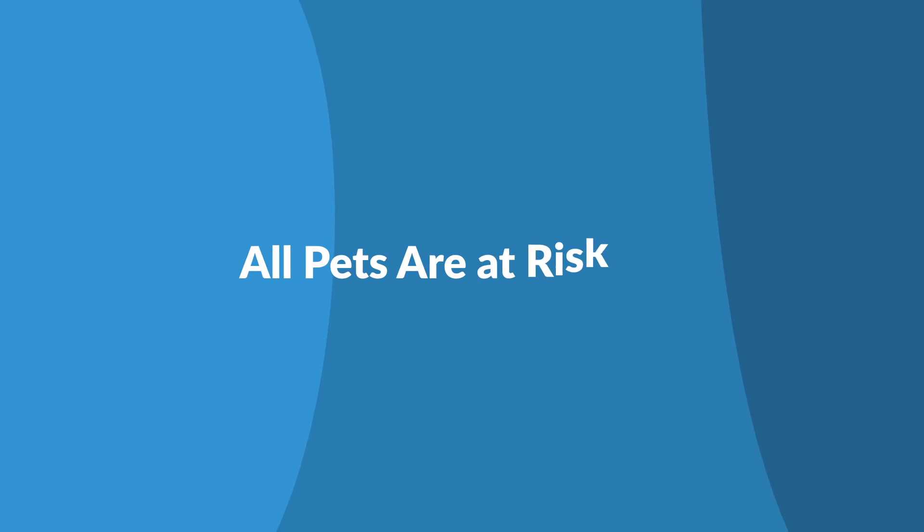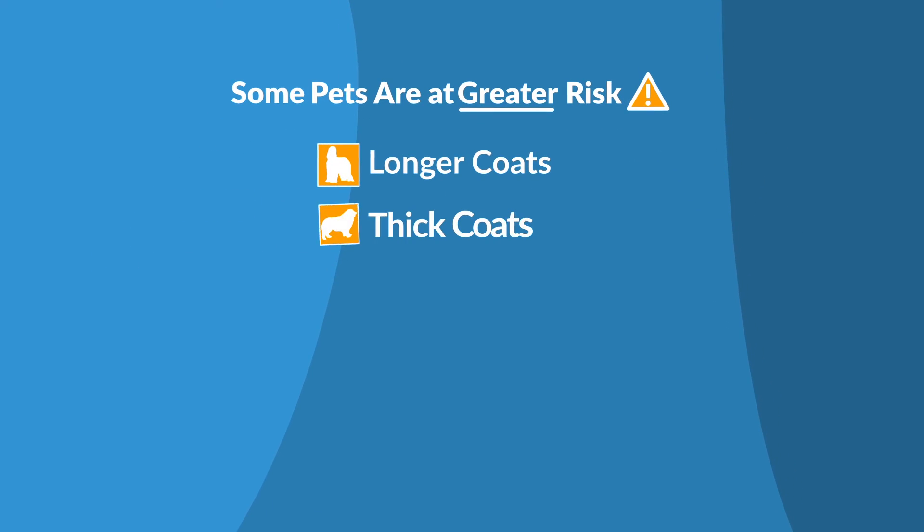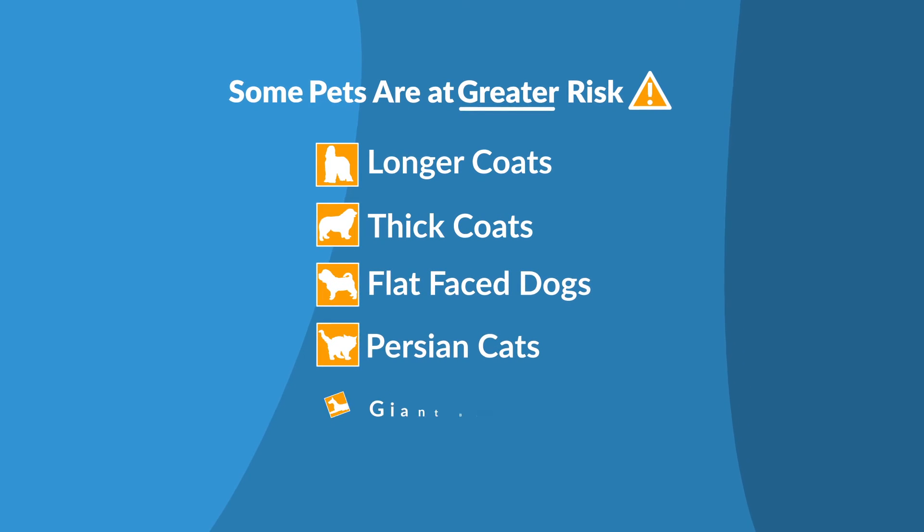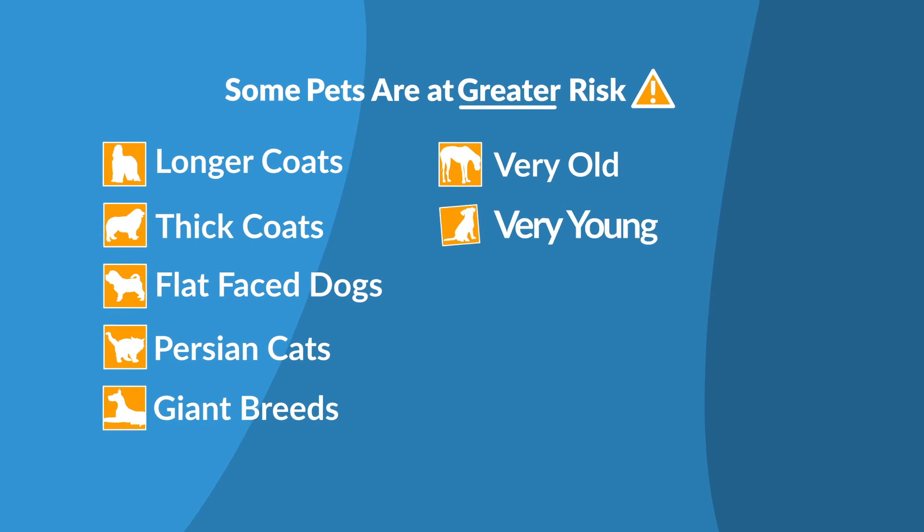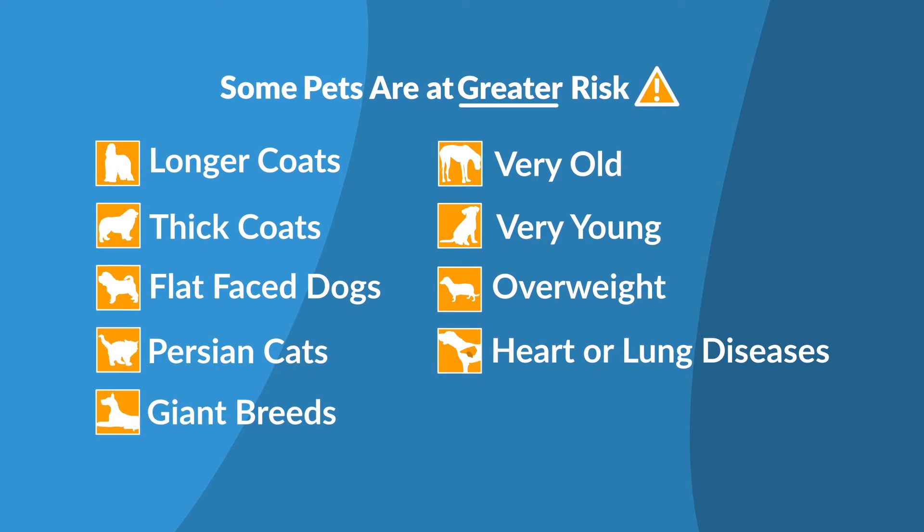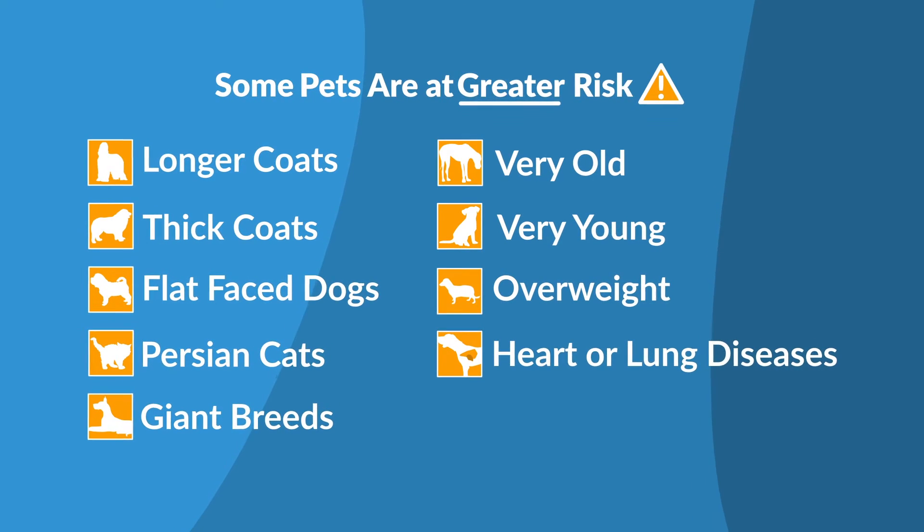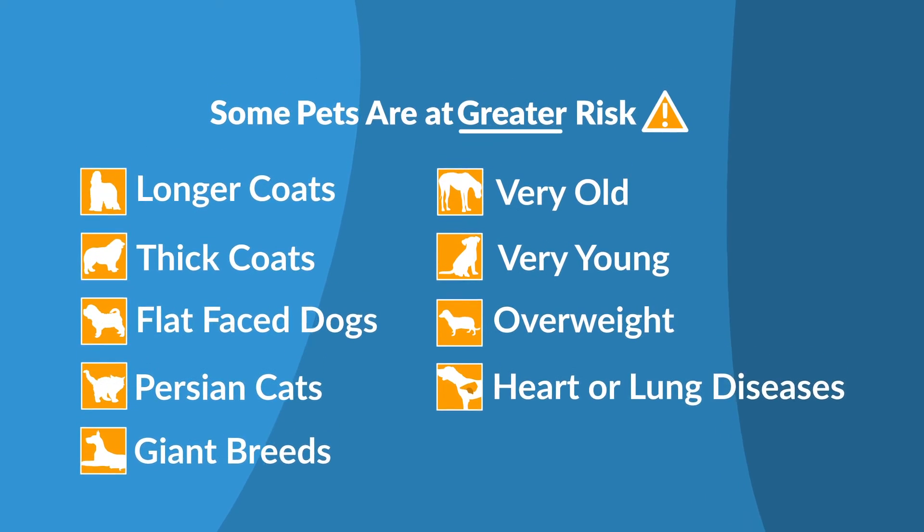While all pets are at risk for heatstroke and dehydration, some pets are at greater risk due to the thickness or length of their coat, their breed, and any health conditions that make temperature regulation difficult. If your pet meets any of these criteria, be especially careful.